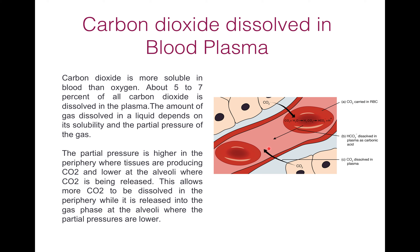The partial pressure of carbon dioxide is higher in the periphery where tissue produces carbon dioxide. But the partial pressure of carbon dioxide is lower at the alveoli where carbon dioxide is being released. This difference in partial pressure allows more carbon dioxide to be dissolved in the periphery while it is released in the gas phase in the alveoli where the partial pressures are lower. This is how blood plasma carries carbon dioxide from tissue to the alveolar surface.